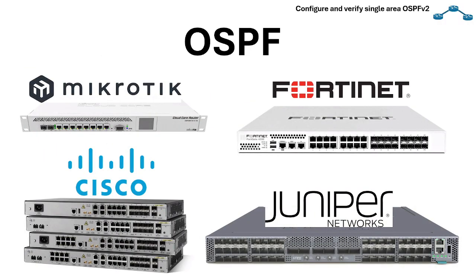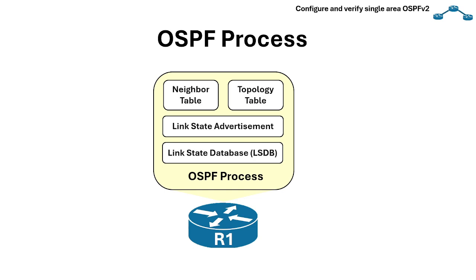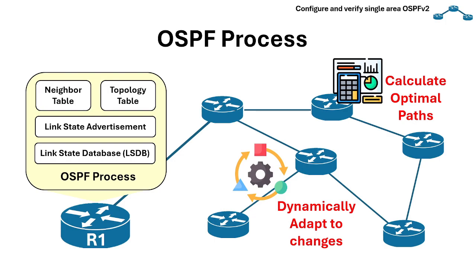OSPF is also an open standard, which means it works with multiple vendors. OSPF has a process which is a set of operations on a router that enables it to run the OSPF routing protocol. This involves discovering neighbors and exchanging link state advertisements or LSAs to build a topology map. This process allows routers to maintain a consistent and accurate view of the network, calculate optimal paths, and dynamically adapt to network changes.